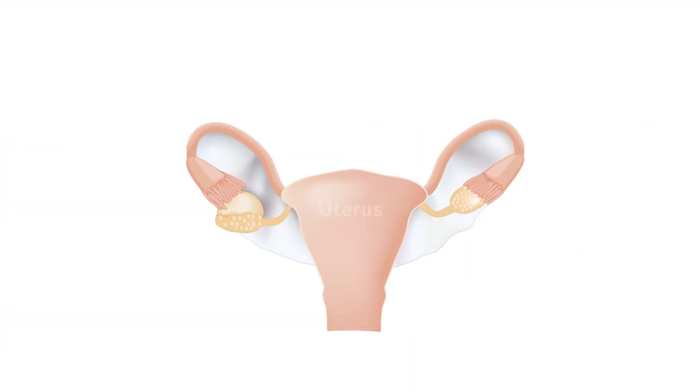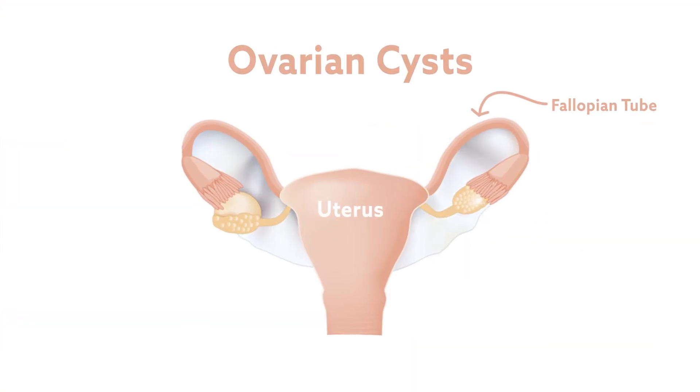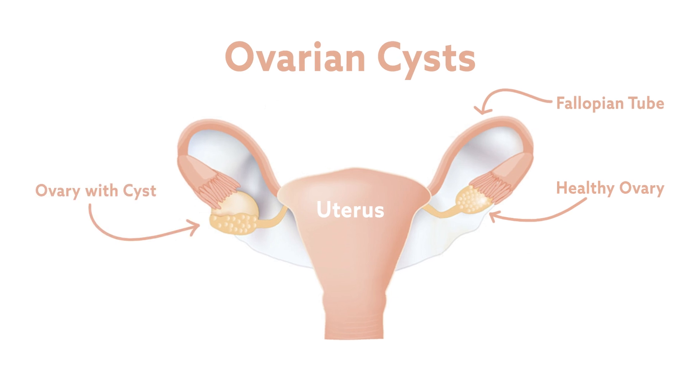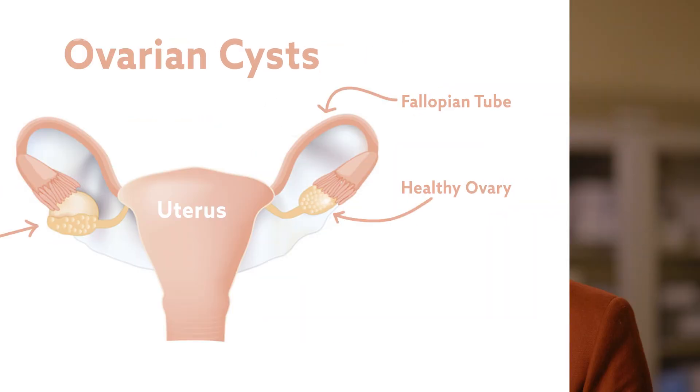Ovarian cysts are typically fluid-filled lesions on the ovaries. The makeup and findings of them vary greatly based on their cause. Some have a solid component, older ones have calcifications, and you'll have cysts with what we call septations or divisions inside. They also vary greatly in size.